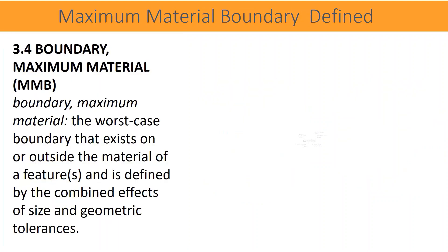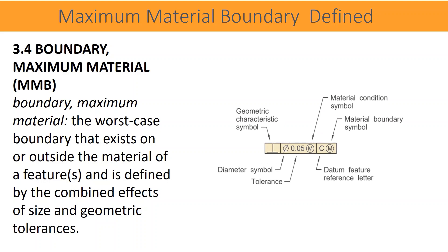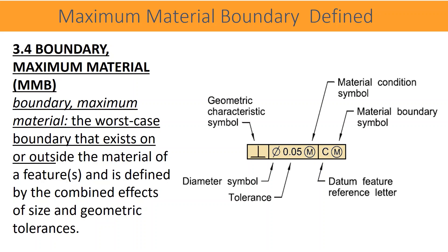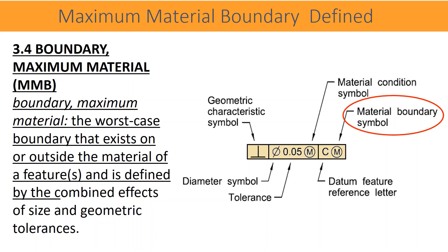In Part 1 we covered the complete concept of MMB. Just to recap, the definition is clause 3.4 — Maximum Material Boundary (MMB): the worst-case boundary that exists on or outside the material of a feature, defined by the combined effects of size and geometric tolerances. The drawing represents the symbols used.